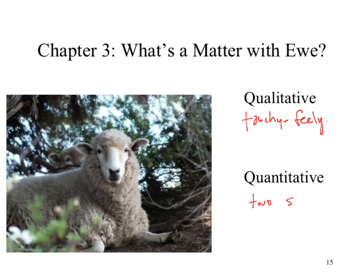We've got two sheep. So our quantitative observations are really kind of our number games. Our qualitative would be more of what we would kind of observe - we are observing that there are two sheep, but our qualitative observation could be that they are white sheep.